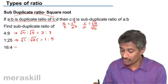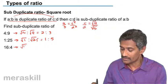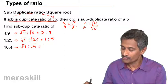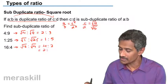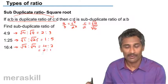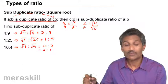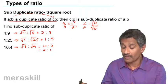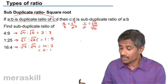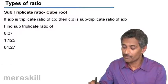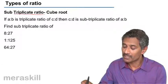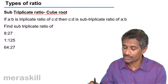The sub-duplicate ratio of 16 is to 4 is root 16 is to root 4, which would be 4 is to 2. Remember, we need to simplify this further, which turns out to be 2 is to 1. Hence, we have the concept of sub-duplicate ratio. Quite similar to that, we have the sub-triplicate ratio, or the cube root ratio.